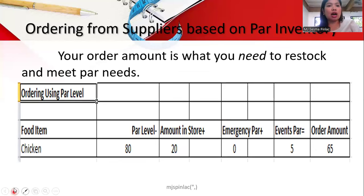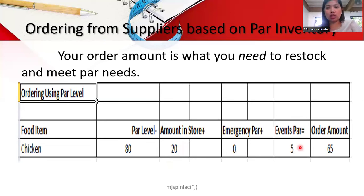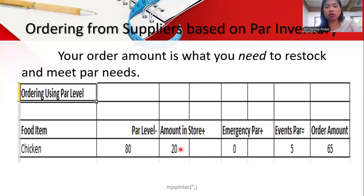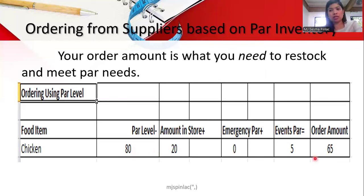For the order amount, if the par level of chicken is 80 and the amount in store is 20, you subtract the amount in store from the par level because that stock is already available. If there is an events par — say 5 additional units — you add that to the par level before subtracting the amount in store. In this example, the order amount is 60.